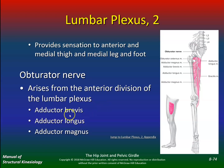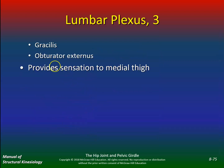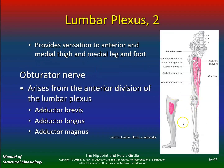The obturator nerve does all the adductors — brevis, longus, and magnus — as well as gracilis and obturator externus, and provides sensation to the medial thigh. So if a patient says they can't feel anything on the inside of their thigh, you might suspect damage to the obturator nerve.